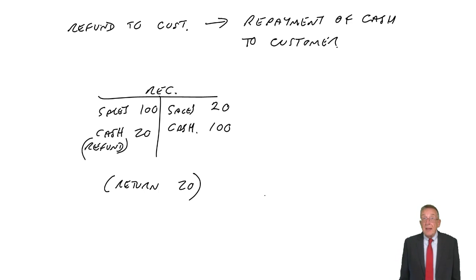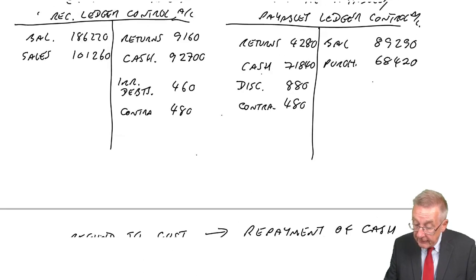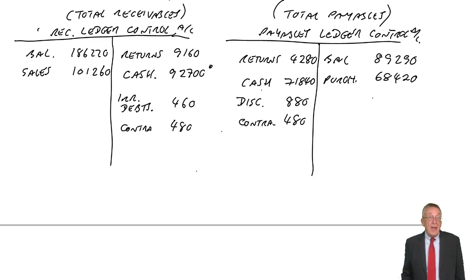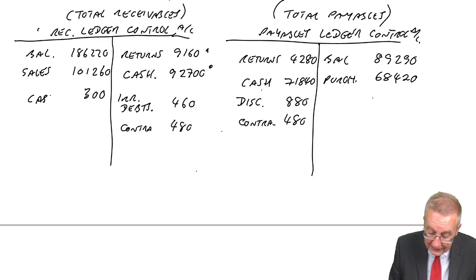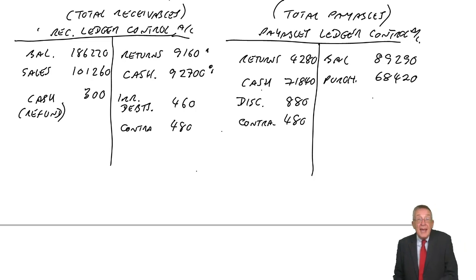So there are several reasons why this might happen, why you might repay cash. But if ever you refund, whatever the reason is, it doesn't matter. If you repay cash, credit cash, debit receivables. And so what's happened here? There have been refunds of 300. I don't care why we've refunded. Maybe part of the cash they paid was an overpayment. Maybe they'd returned goods and they'd already paid them. I don't care. If we refund, we simply repay cash, credit cash, debit receivables with the refund. When we receive cash, debit cash, credit receivables. If we repay some of that cash, whatever the reason, we effectively reverse it. Credit cash, debit receivables.